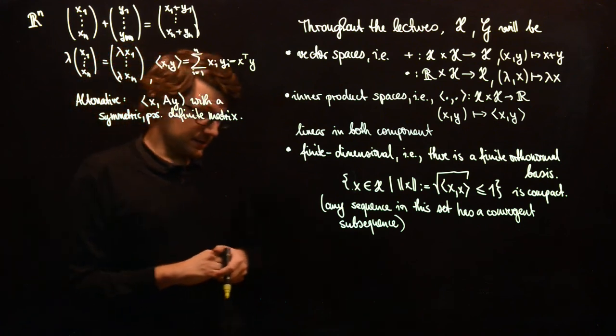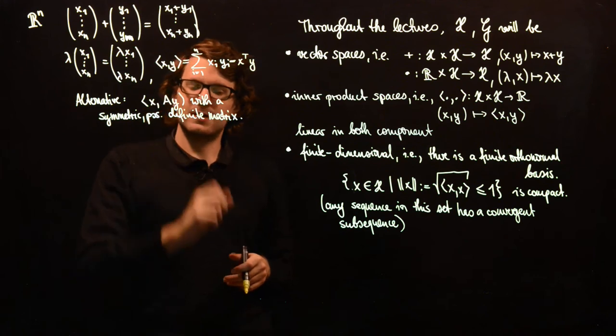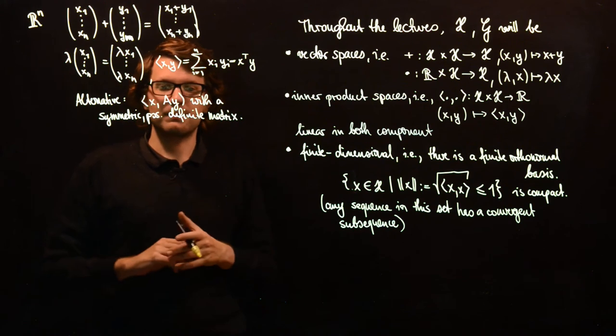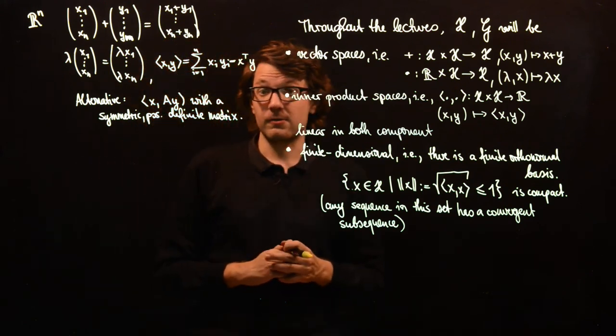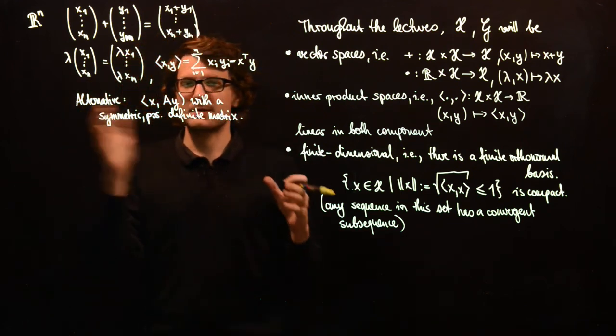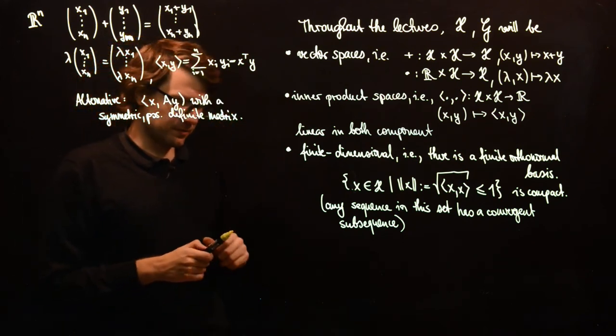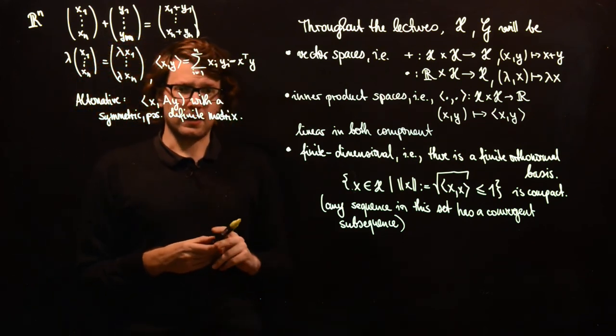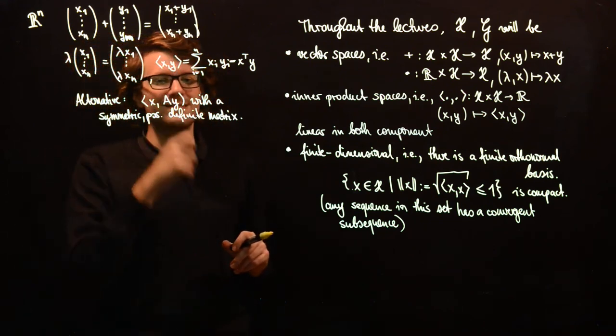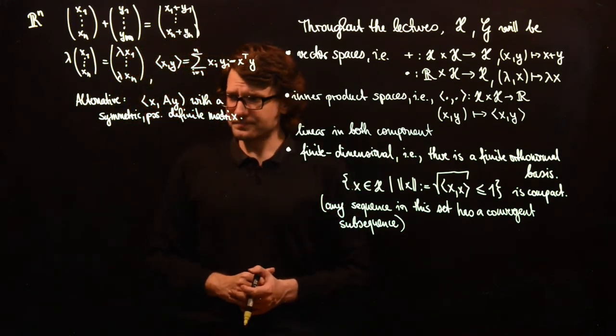The reason why I don't want to define the inner product as this, you can also by the way write this as X transpose Y, is that in the very probably very last section, we'll see how we use a different inner product in order to more conveniently prove the convergence of an algorithm. Therefore I want to keep this as general as possible. Sometimes you actually use this matrix A for numerical purposes, and then this can be called preconditioning. Sometimes your problem gets easier if you take a different inner product on your space.